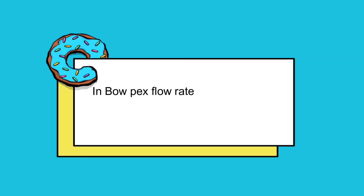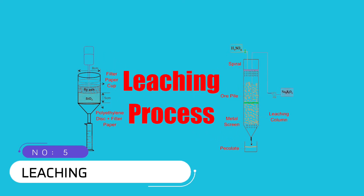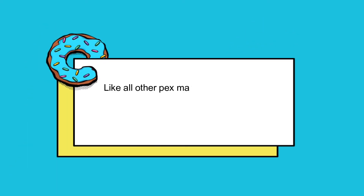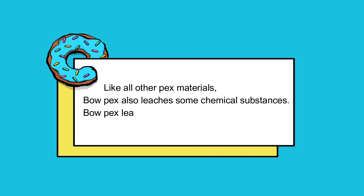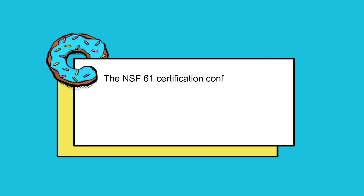Number 5: Leaching. Like all other PEX materials, BioPEX also leaches some chemical substances. BioPEX leaches some gasoline substances like TBA, ETB, MTB, etc. The NSF-61 certification confirms the piping system to prevent this harmful leaching. SuperPEX has this certification, so when you use SuperPEX, you can be safe from these leached chemicals.